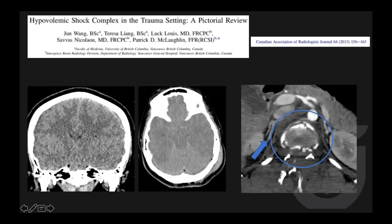The head CT of the same patient showed profound cerebral edema, diffuse tight cortical sulci, slit ventricles, pseudosubarachnoid sign, possibly brainstem hemorrhage, skull base fractures, and extensive lumbar spine fracture. Enhancement of the adrenal gland is also documented in hypovolemic shock complex.